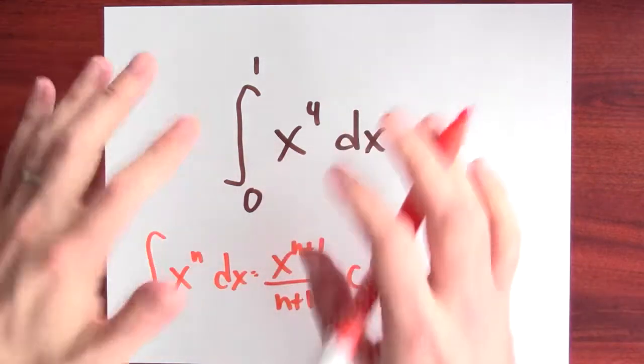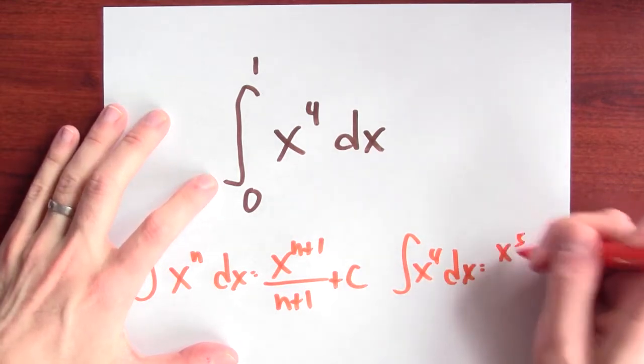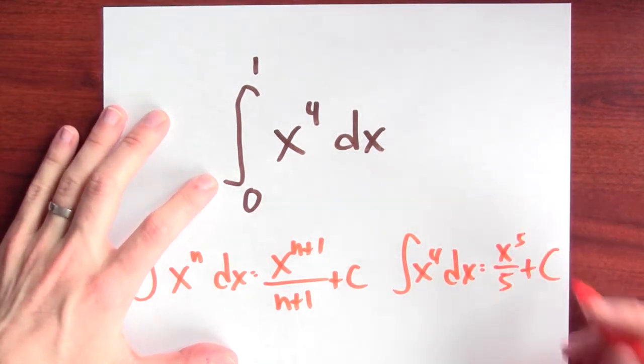So, for this specific problem, right, what's an antiderivative for x to the 4th? Well, it'll be x to the 5th over 5 plus some constant c.